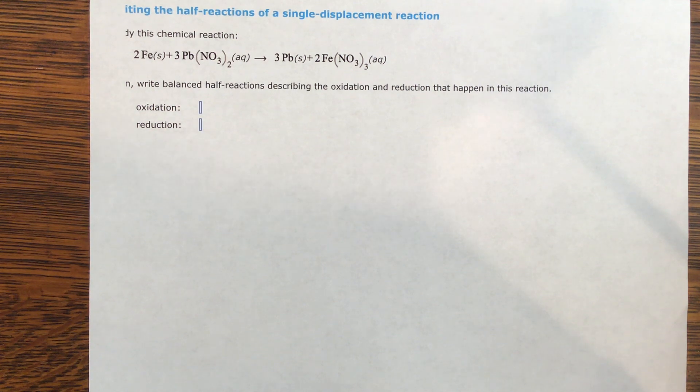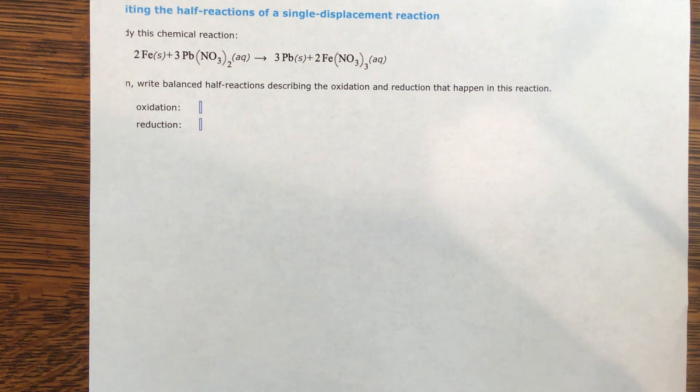A redox reaction is one in which an electron is transferred. As an electron goes away from one element, that element is going to go up in charge and become oxidized. As that electron goes to a different element, that is going to be reduced in charge, and so that is called reduction.